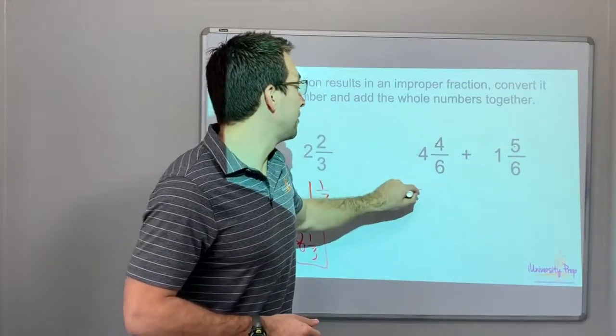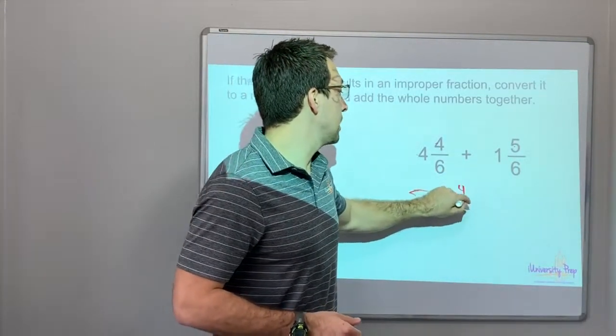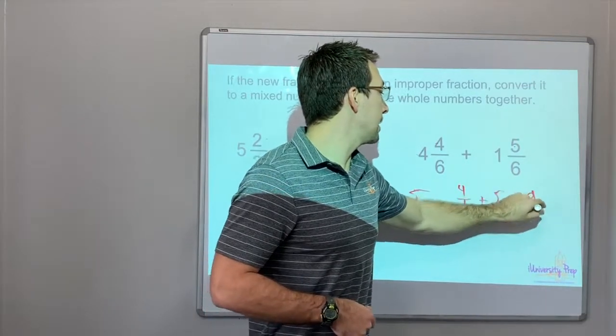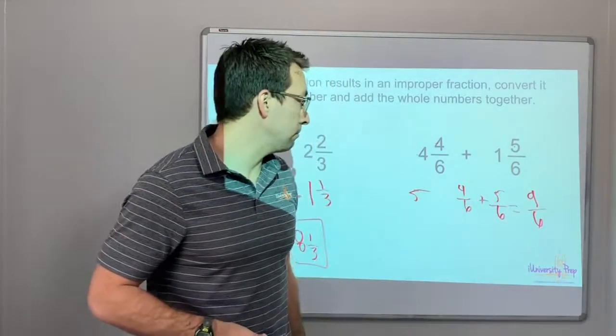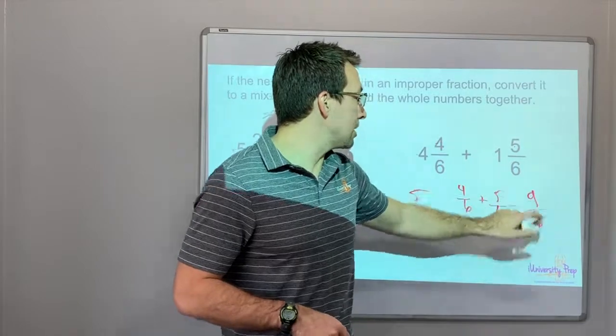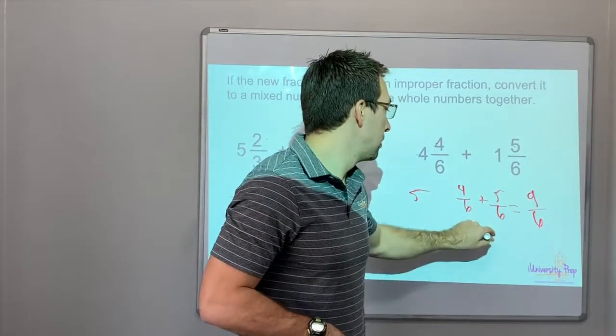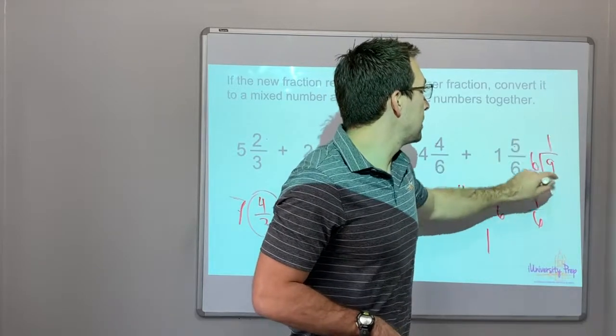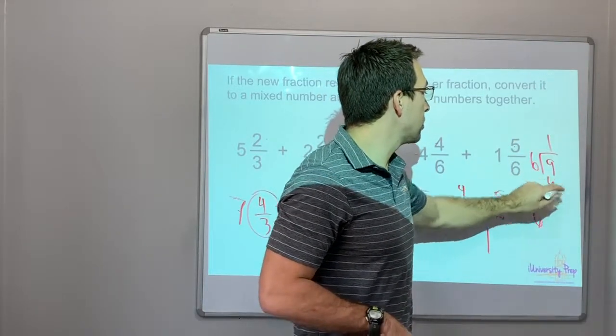4 plus 1 is 5. 4/6 plus 5/6 equals 9/6, right? Okay, so 6 goes into 9 one time. 9 divided by 6 one time, and then what's our remainder? 3.